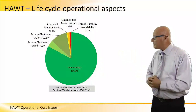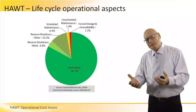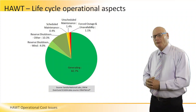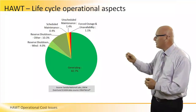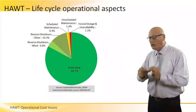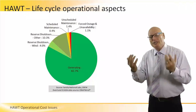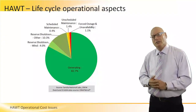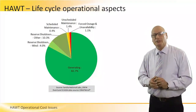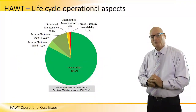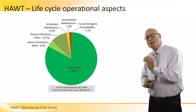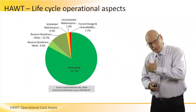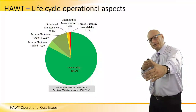1.4% is unscheduled maintenance due to system breakdown. Forced outage and unavailability account for 1.1% — all other reasons a system will not work, whether technical or administrative. So 82.7% is a pretty good number for a system generating electricity over the entire year.